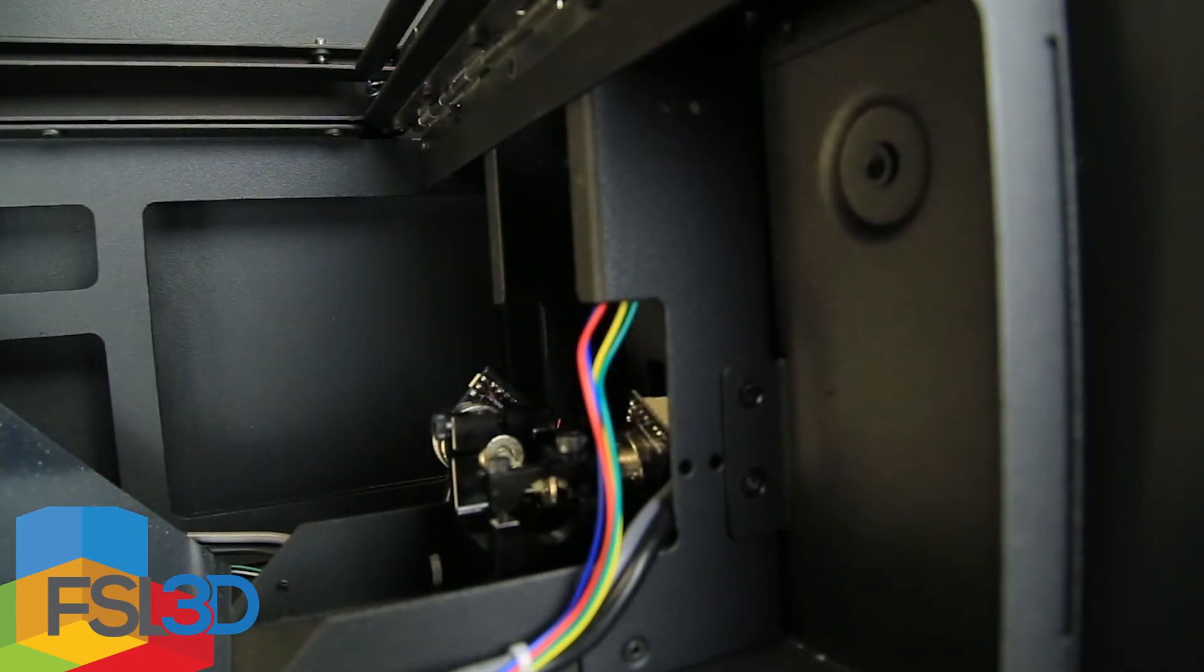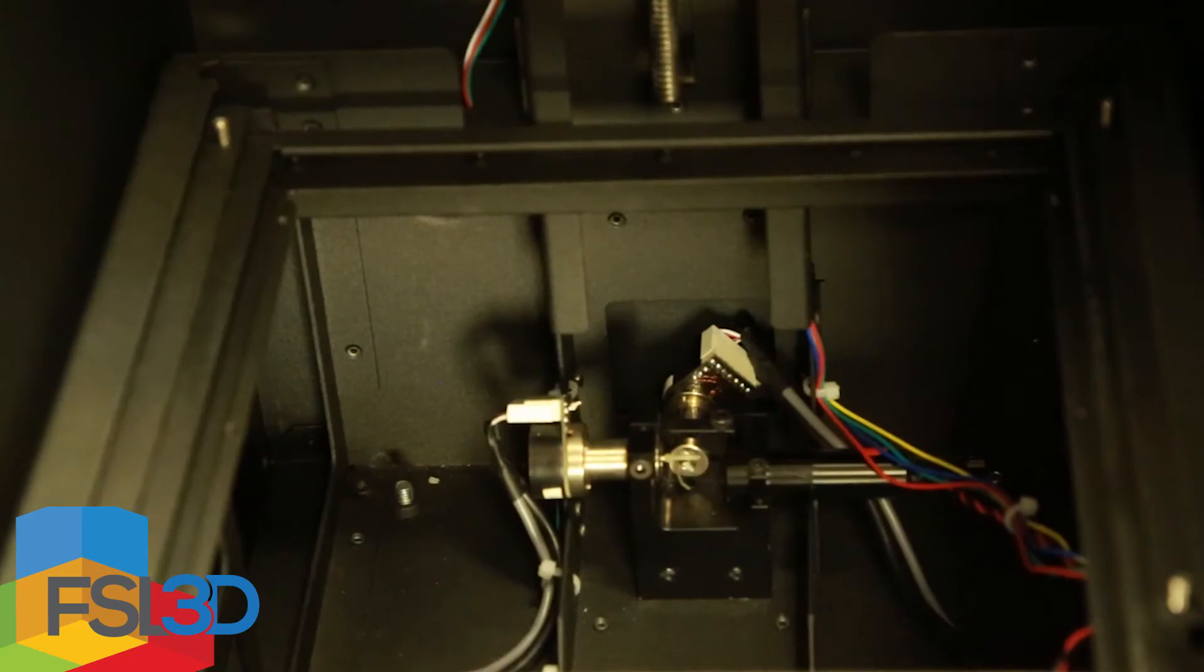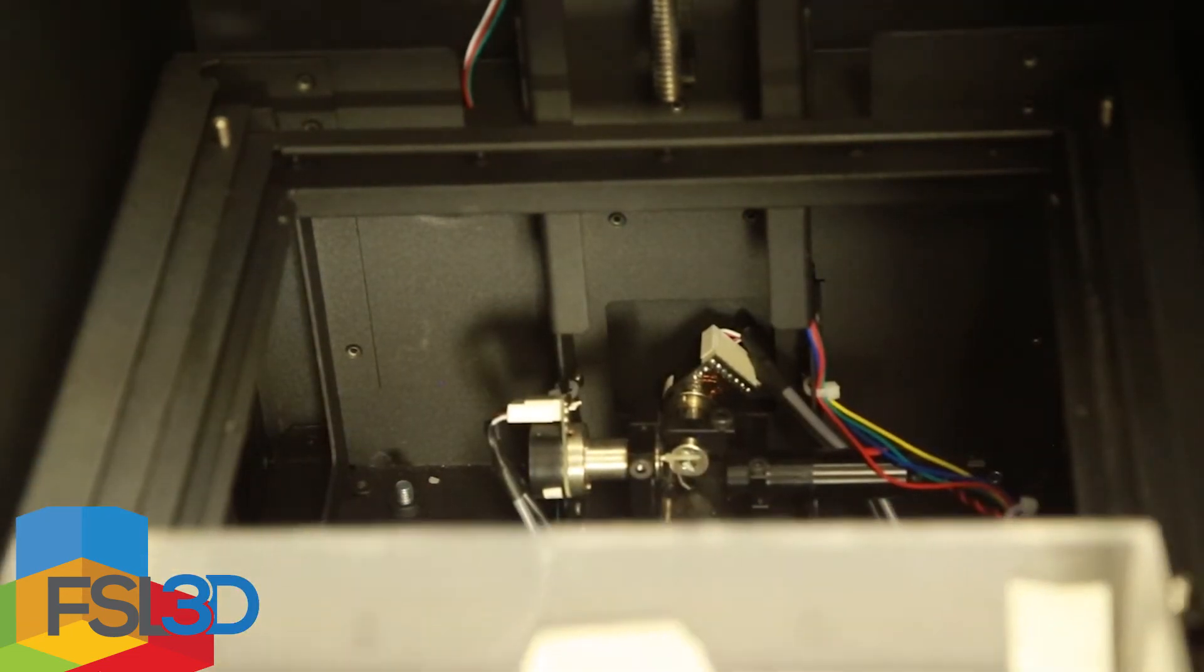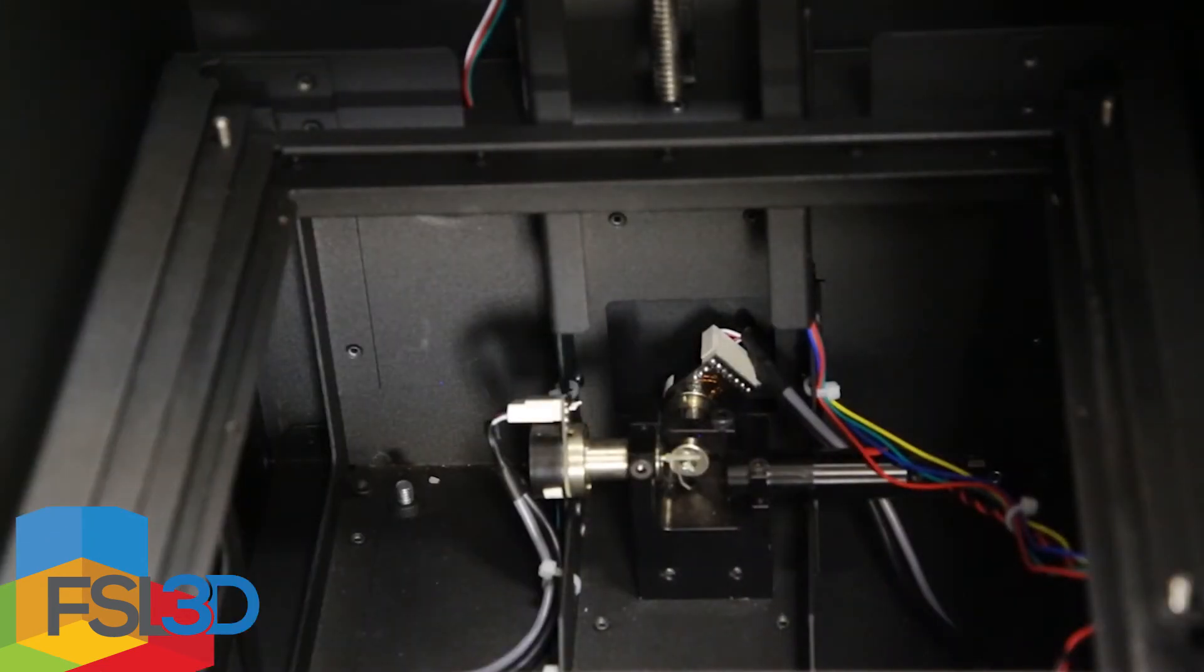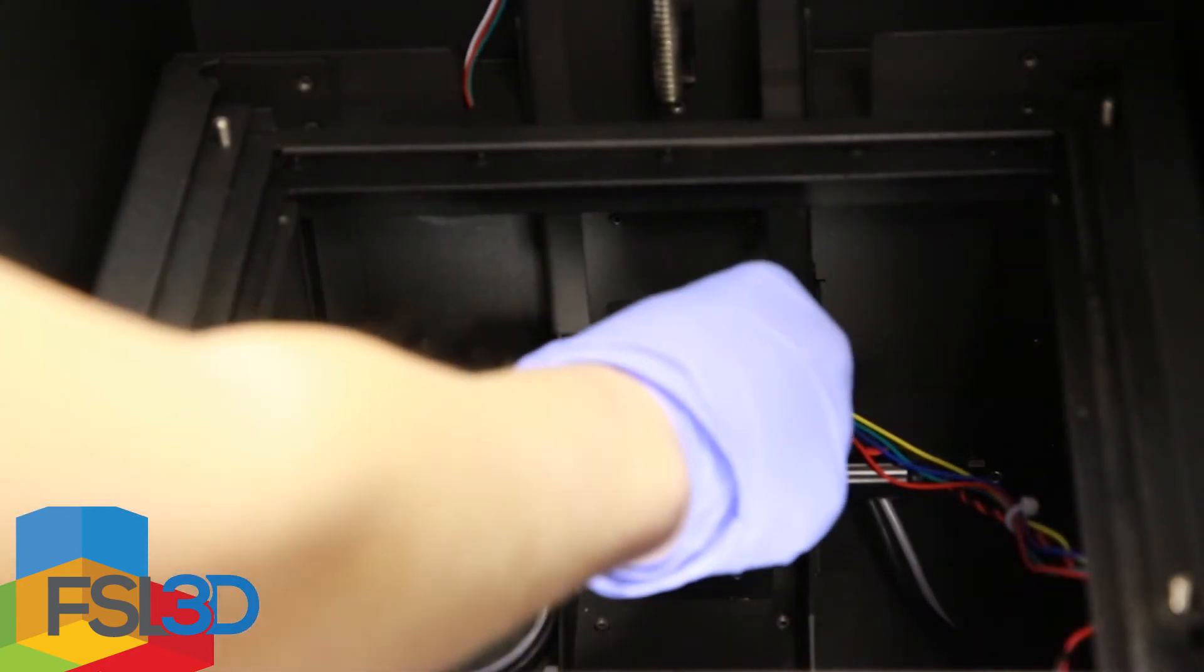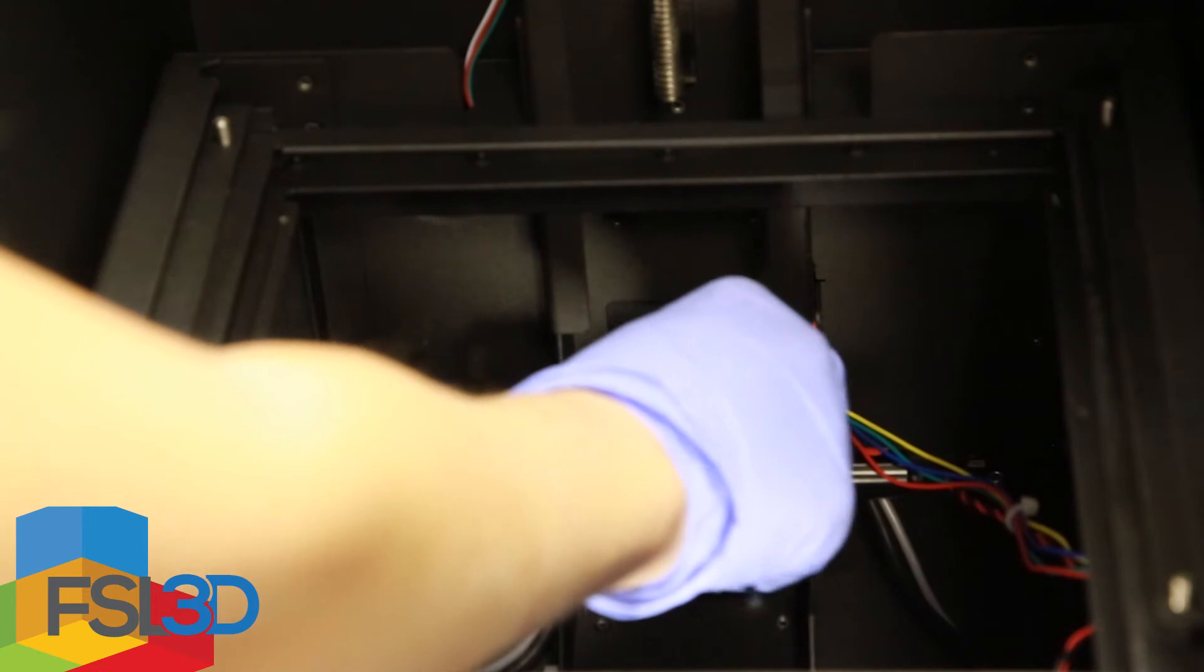While adjusting, the Y galvo may not be centered, but do not adjust it. Only focus on one galvo at a time. Attempt to get the laser to rest on any point in the center column. When that's achieved, secure the position with a hex key.